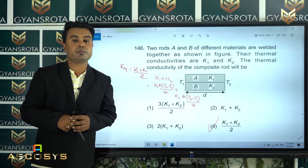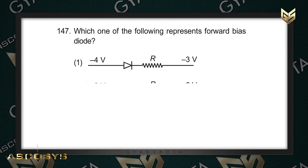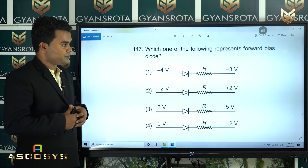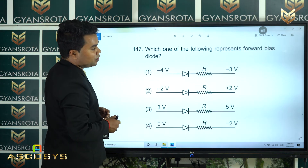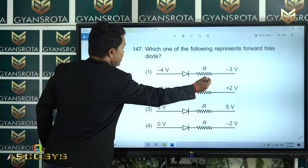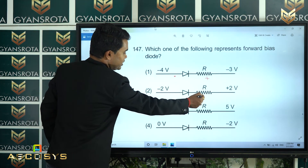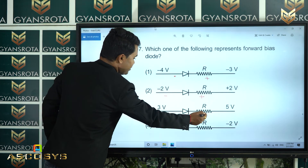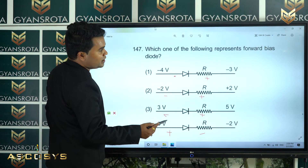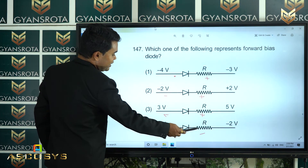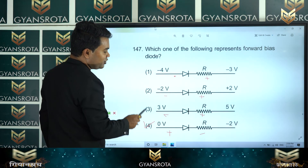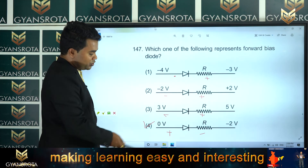Question number 147: Which one of the following represents a forward biased diode? In forward bias, the positive terminal is connected to the P-side and the negative terminal to the N-side. Checking the options by comparing the potentials at each terminal, only one option satisfies this condition; the other three are all reverse biased. This is from the chapter semiconductors. Option number 4 is the correct answer.